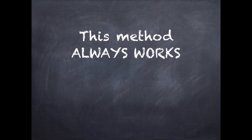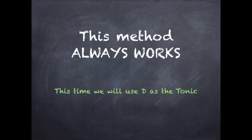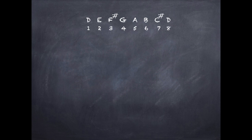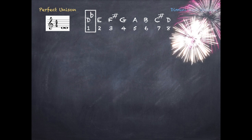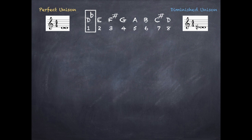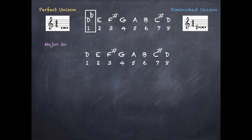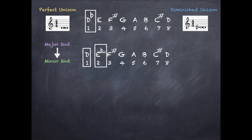This method always works. This time we're going to use D as the tonic to prove it. A perfect unison first is repeating the tonic note twice. To create a diminished unison, flatten the second D and place it on the stave — remember to use the natural and the flat accidental. To create a diminished second, first create a major second — D to the second note, which is E. Convert that to a minor second by flattening the top note, so E becomes E flat. To create a diminished second, flatten the top note of the minor second, so E flat becomes E double flat.